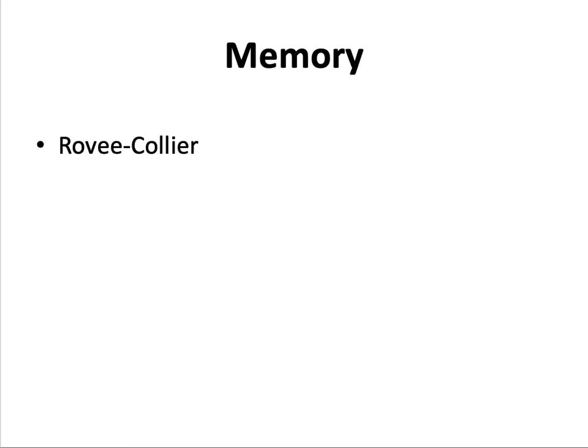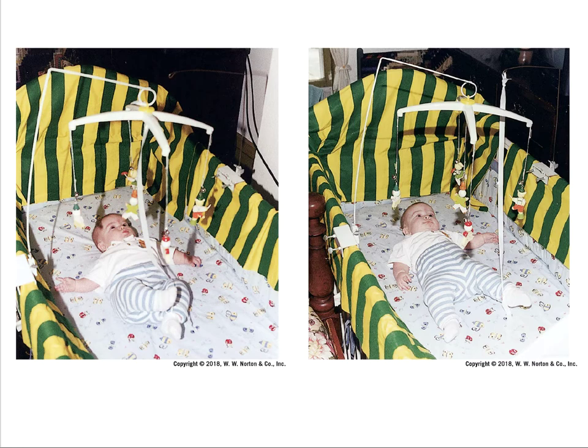Now we're going to discuss memory. Rovee-Collier revealed that from a very young age, infants possess some types of memory. In one experiment with infants ranging from 2 months to 18 months, older infants could retain memories regarding a connection between ankle kicking and a mobile moving for longer periods of time. Infants learn that kicking their feet moves a mobile because one foot is attached to the mobile by a ribbon around the ankle. After a delay, the infants are placed back under the mobile. If they kick their feet vigorously to get the mobile to move, they have shown that they remember the connection from the learning phase.